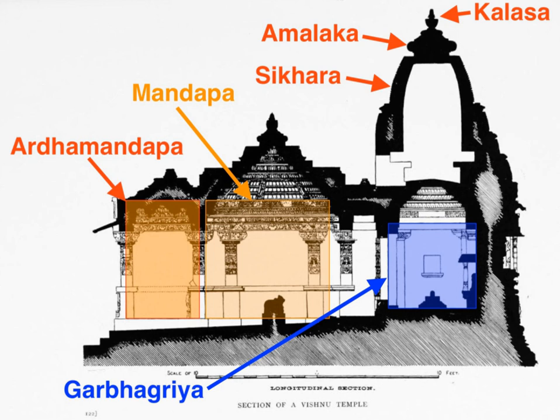It is this Garbagriha which devotees seek for Darsana, literally a sight of knowledge, or vision. Above the Vastu Purusha mandala is a high superstructure called the Shakara in North India, and Vimana in South India, that stretches towards the sky. Sometimes, in makeshift temples, the superstructure may be replaced with symbolic bamboo with few leaves at the top. The vertical dimensions cupola or dome is designed as a pyramid, conical or other mountain-like shape, once again using the principle of concentric circles and squares.